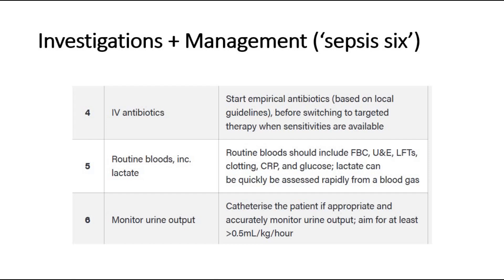Routine bloods should include full blood count, urea and electrolytes, liver function test, clotting, CRP, and glucose. Lactate can be assessed rapidly from a blood gas analysis. Lastly, monitor the urine output.